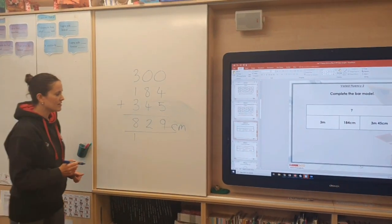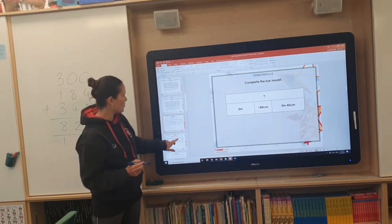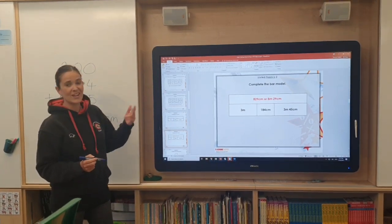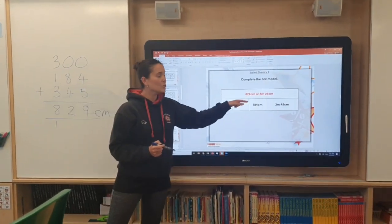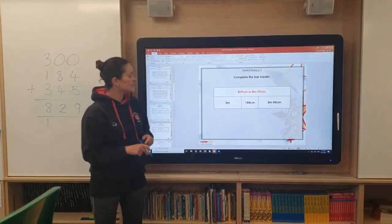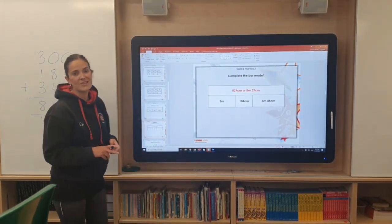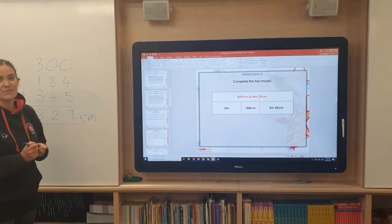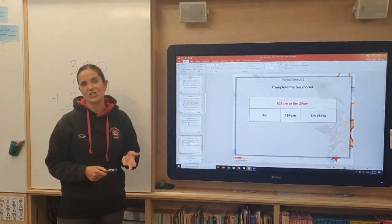That there would be 829 centimetres. And that number is what you would put into your top bar there. You could have it in centimetres or you could have it in metres and centimetres. And this is how those kinds of examples work. And there were some of those for you to do on your worksheet today.